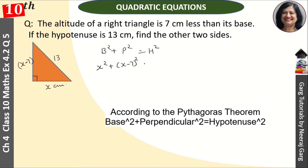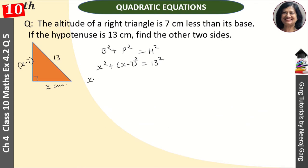x square minus 14x plus 49, that is equal to 169. 13 ka square is 169. Toh ye ho gaya 2x square minus 14x plus 49.